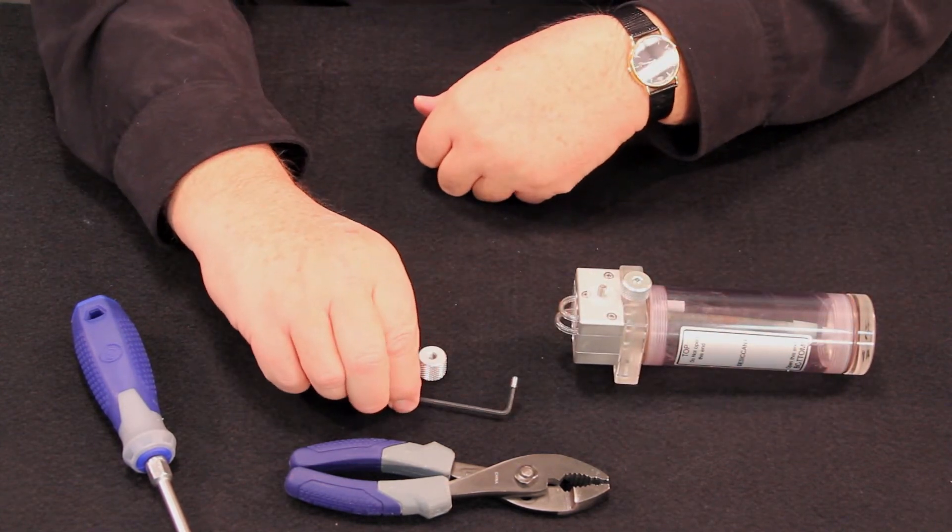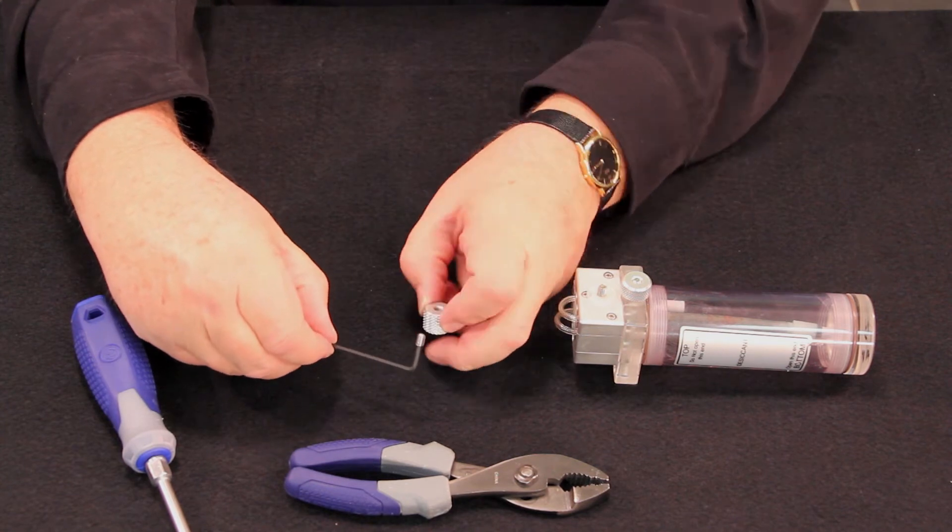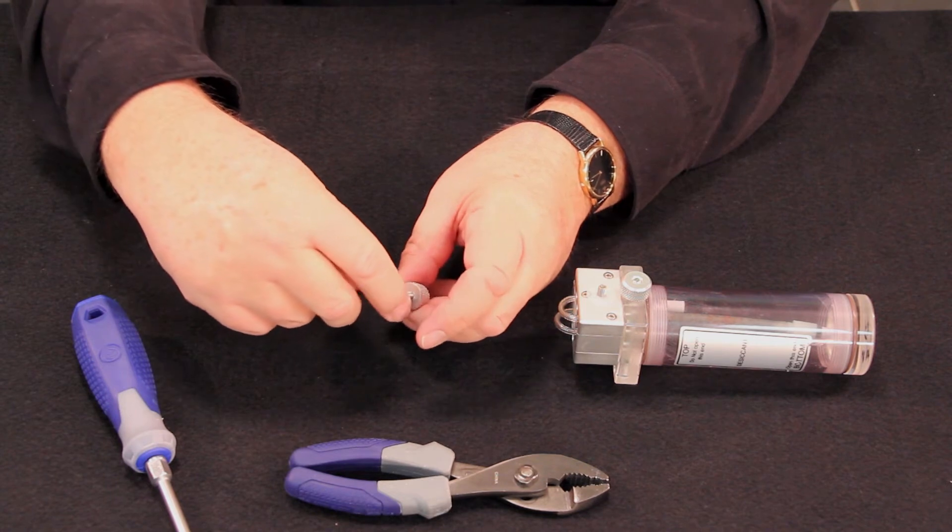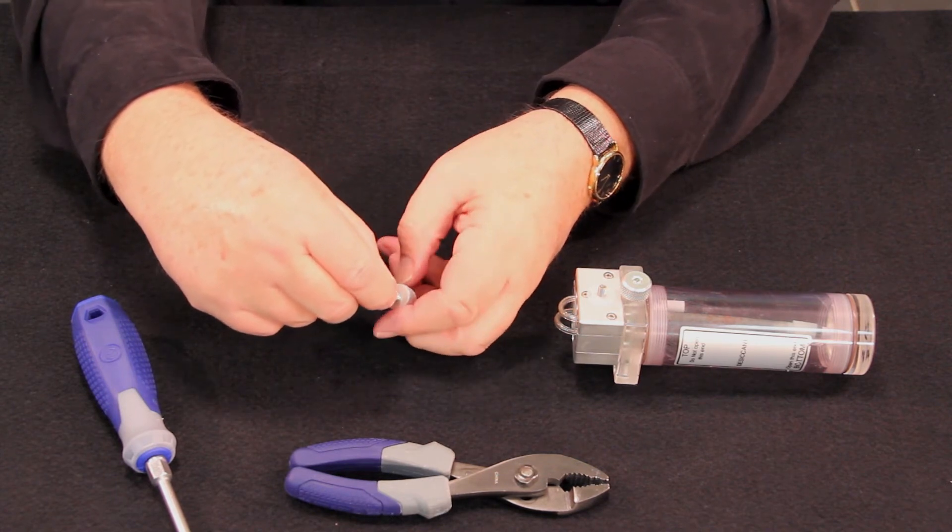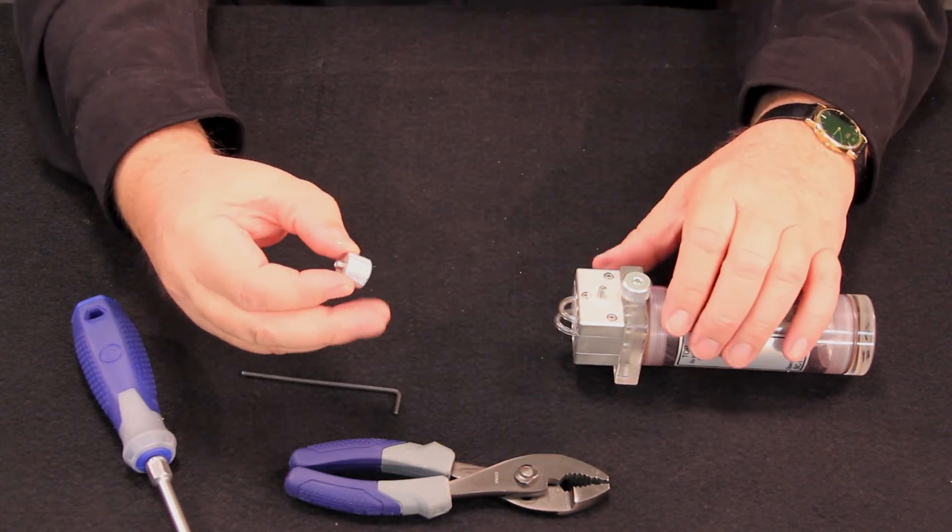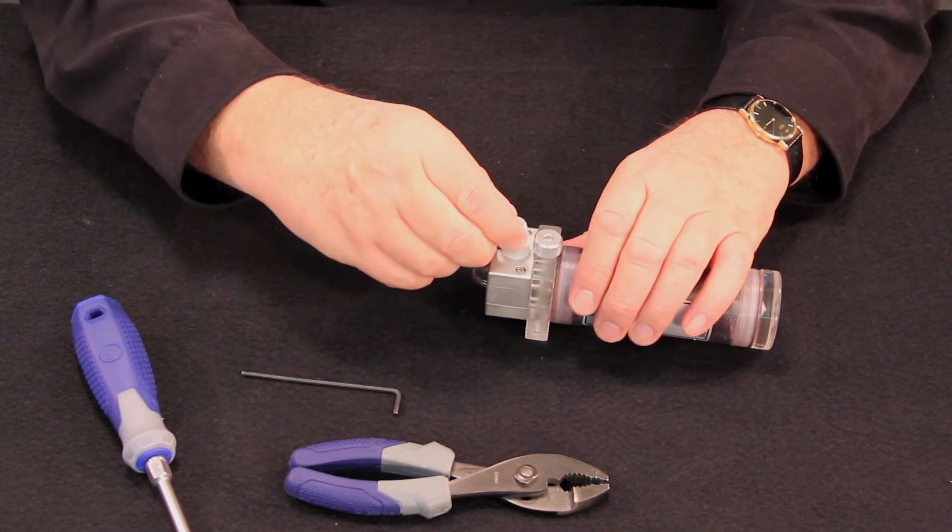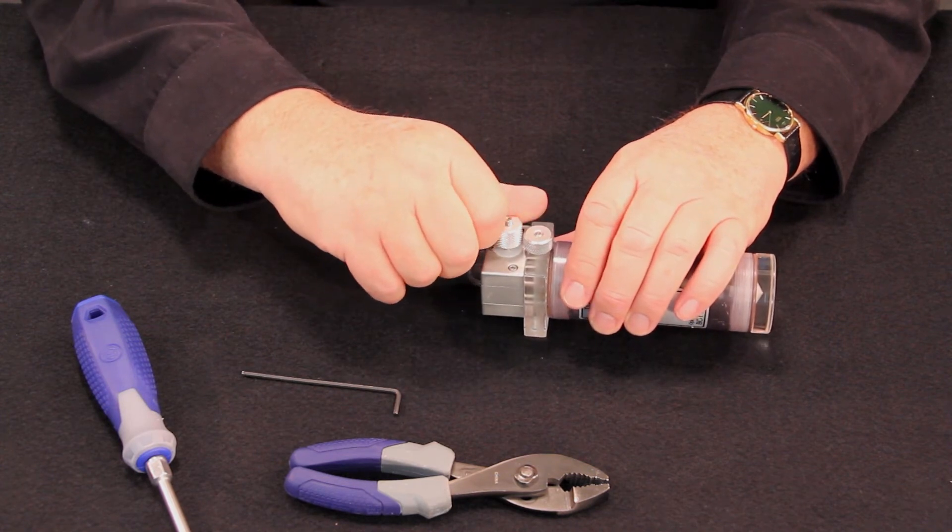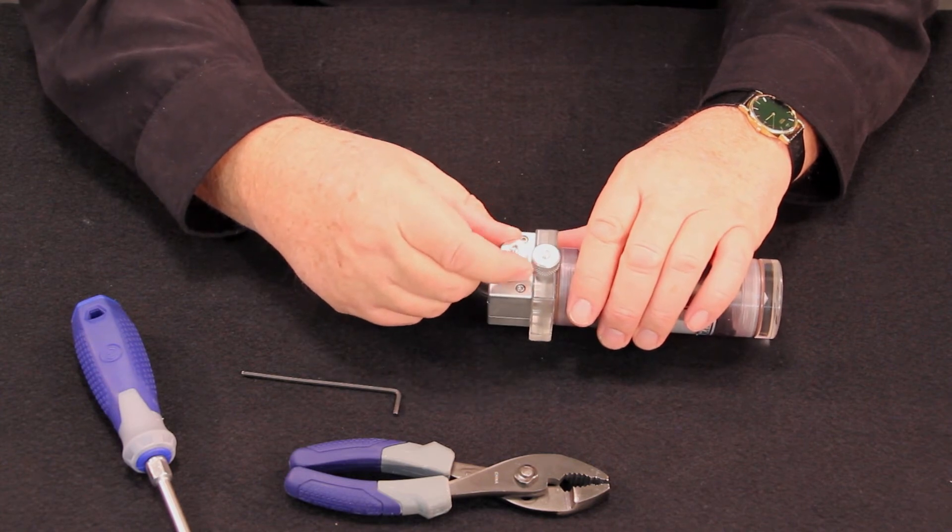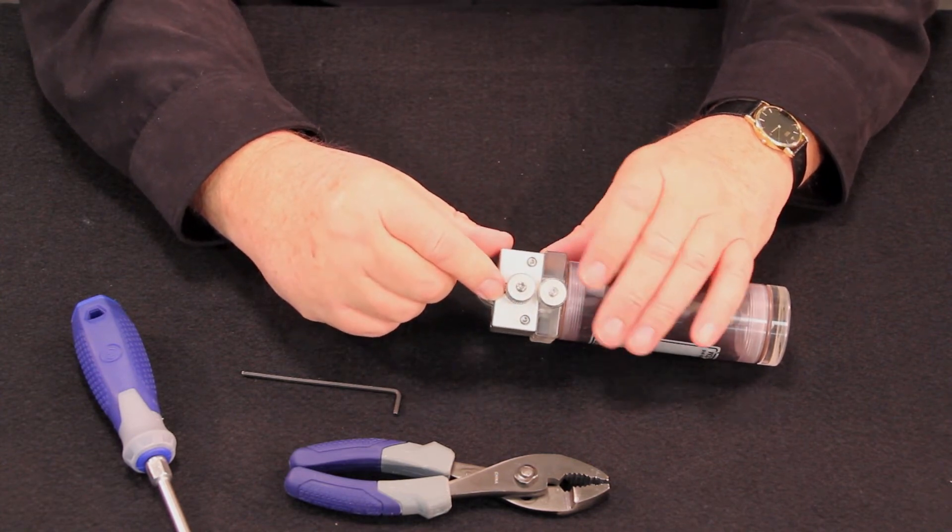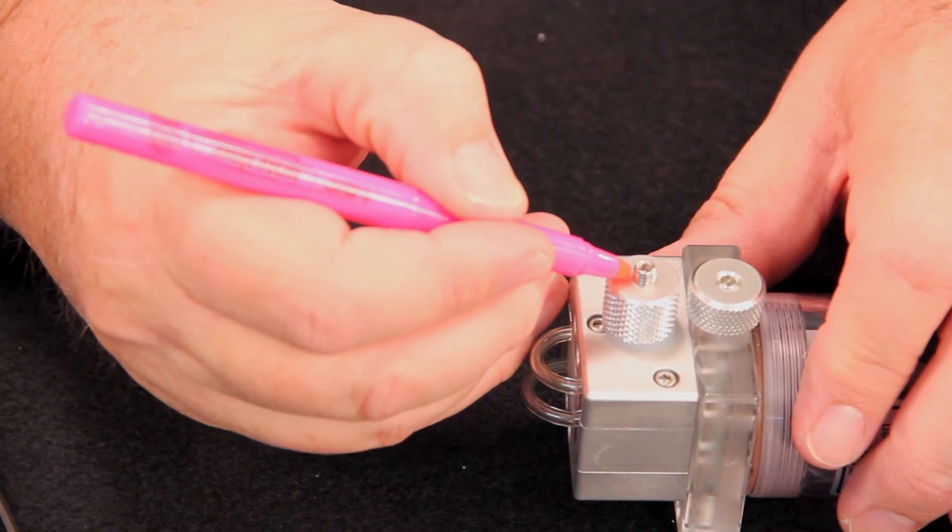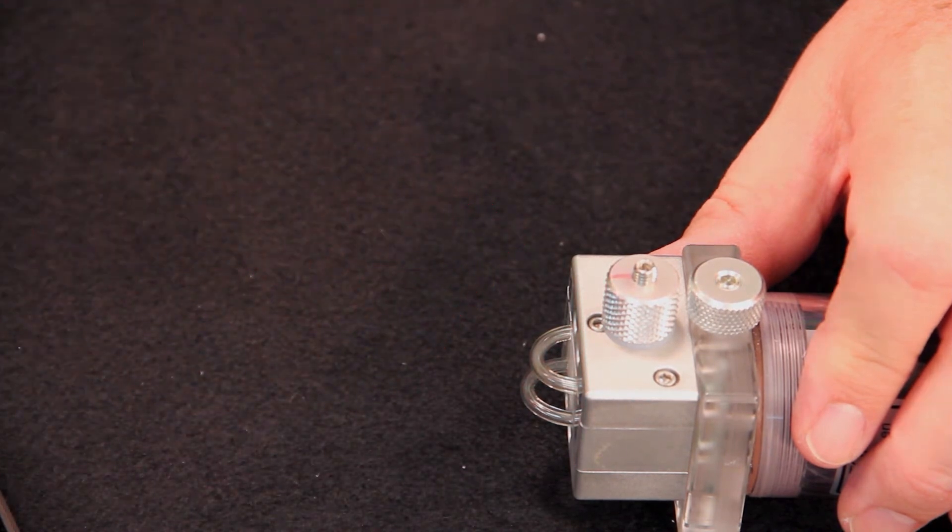Next, you should install the set screw into the knurled flow control knob. Only partially install the set screw, then install the knurled control knob on the flow control screw. Finger tighten the knob up to the white plastic washer. Mark the position of the knob with a felt pen.